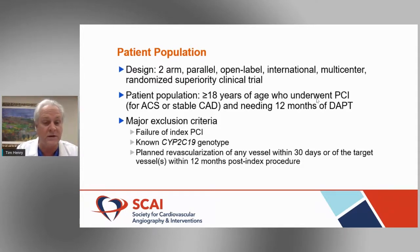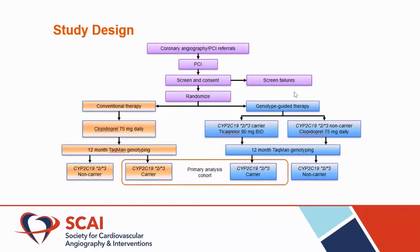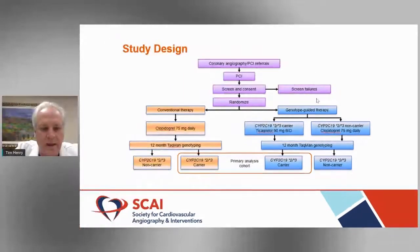The trial design: patients were randomized to either conventional therapy with clopidogrel, or genotype-guided therapy. In the genotype-guided arm, carriers were randomized to ticagrelor 90 mg twice daily. At the end of 12 months, genotyping was performed on everyone. The primary analysis presented at ACC focused on patients who were carriers — comparing those who received ticagrelor versus those who received clopidogrel among carriers.